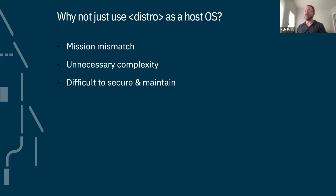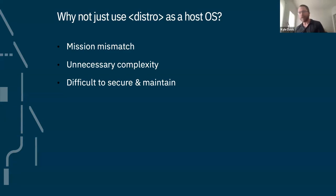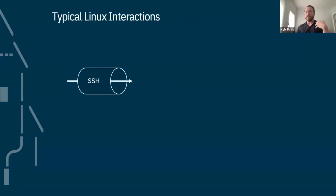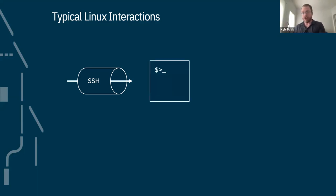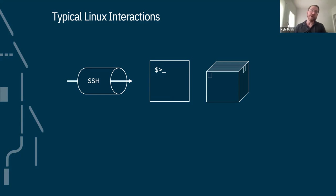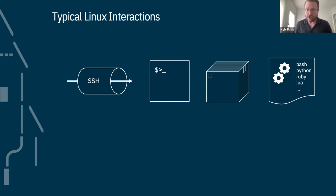As a consequence, that complexity makes it difficult to secure and maintain those OSes — what one of my principal engineers calls a high 'care and feeding cost,' like owning a horse you don't need. When you think about what you want to do with Kubernetes and how you mostly want to manage worker nodes, a container-optimized Linux distribution is usually a really good fit.